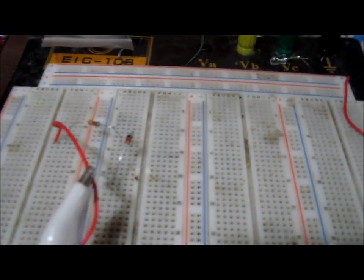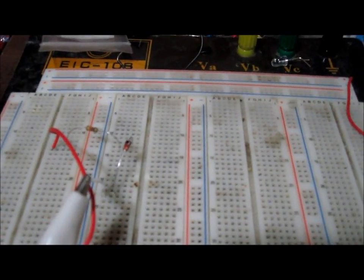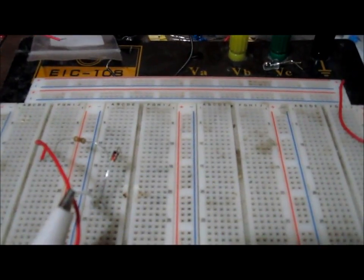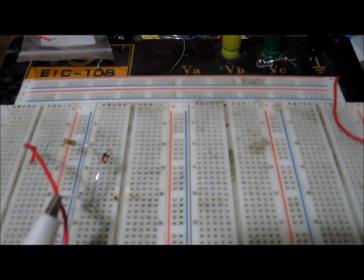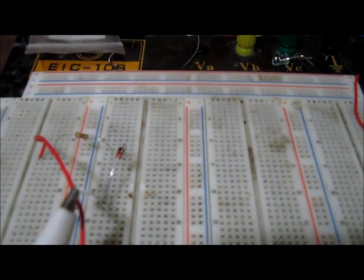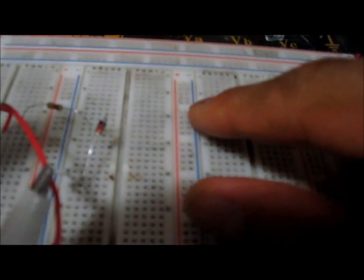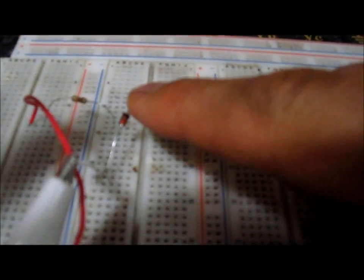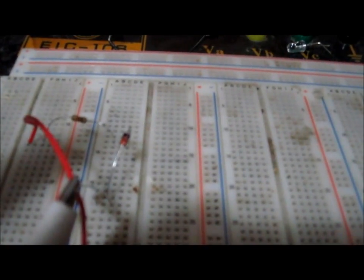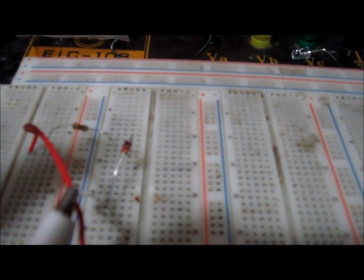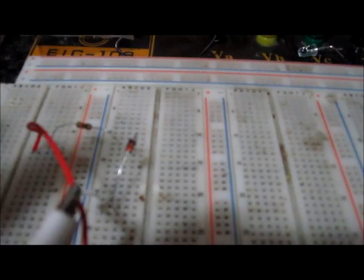Hey guys, in this video I'm going to show you how to build a voltage regulator using a Zener diode. This circuit uses a single Zener diode, as you can see here, and a single resistor. Those are the only two components needed to build a voltage regulator using a Zener diode.